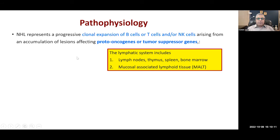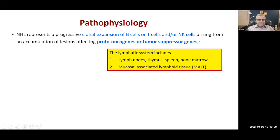NHL represents a progressive clonal expansion of B cells, T cells, or natural killer cells. Going back to the bone marrow, we have pluripotent cells that differentiate into certain lineages. When they differentiate into the white blood cell lineage, they have three lines: B cells, T cells, and natural killer cells. There is an accumulation of mutations in proto-oncogenes and tumor-suppressor genes.